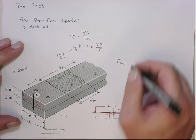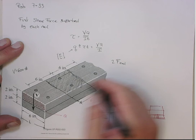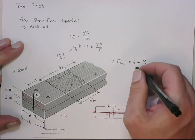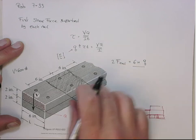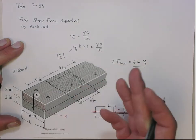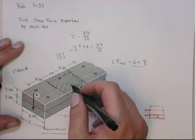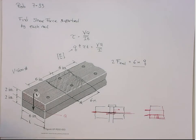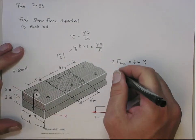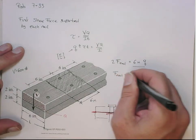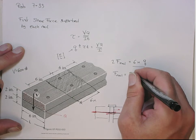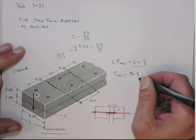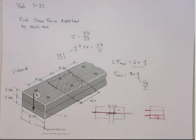Two times the force in a nail — because there are two nails — has to equal six inches times Q. Remember Q is force per length; multiply by the length that picks up the nail and that gives a force shared by two nails. So the force in a nail is going to be equal to three inches times Q, and Q is going to equal VQ/I — this is where we get VQ/I. Now we need to compute the geometric factors.